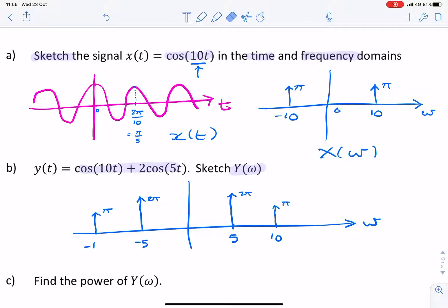Now, it says, find the power. To find the power of a signal, because it's a cosine, the power of each cosine—so if you had a cosine ω₀t, its power would be A² over 2.